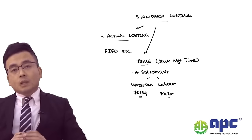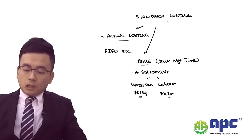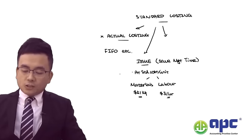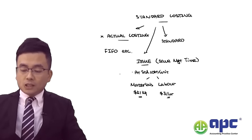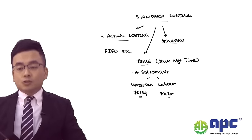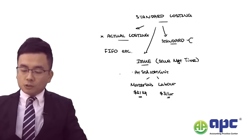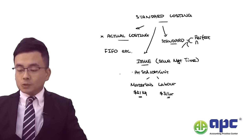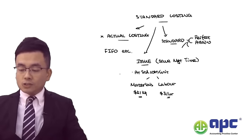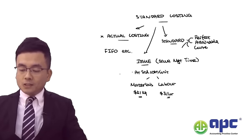The key problem lies with how we're going to set up our standard. When setting up a standard, we have four different choices: the perfect standard, the attainable standard, the current standard, and the basic standard — which does not change over the years.